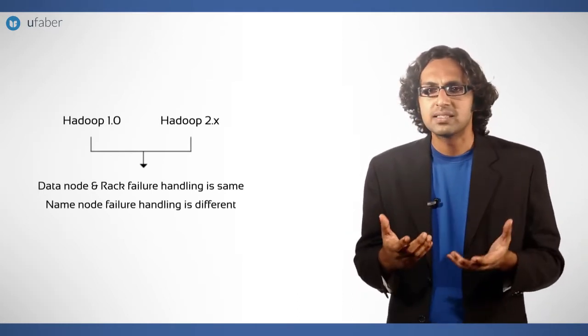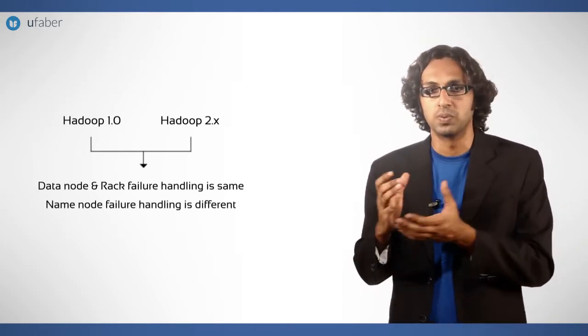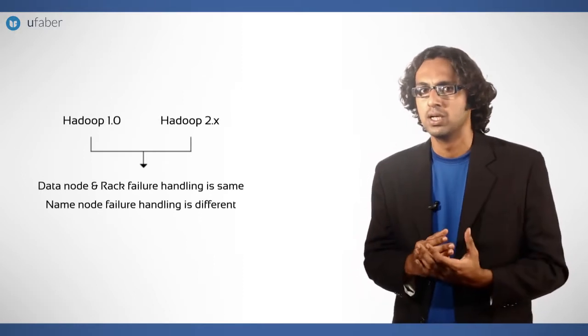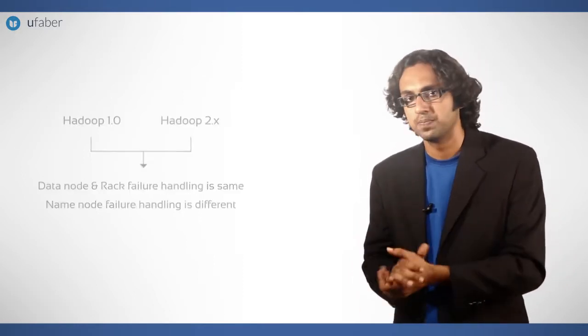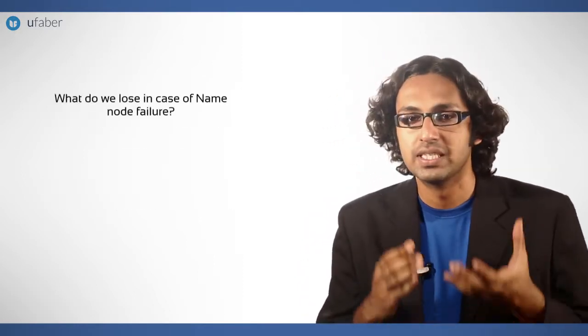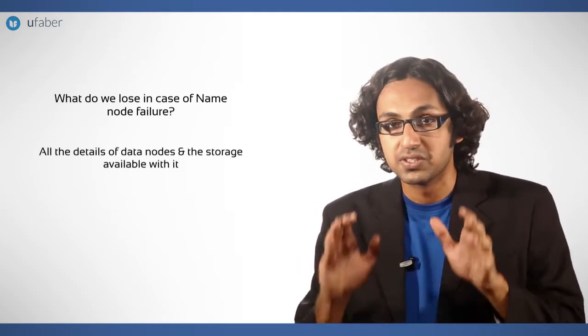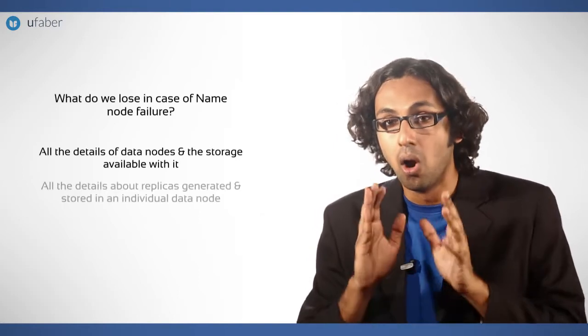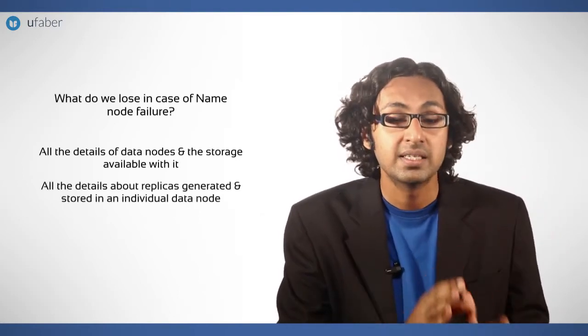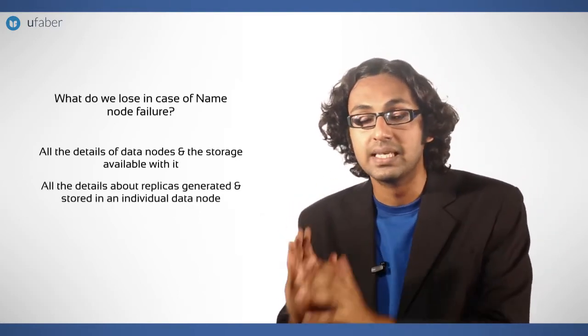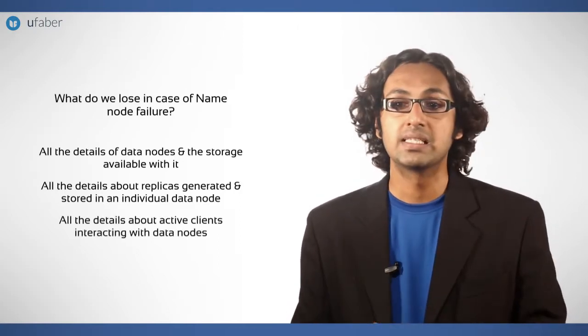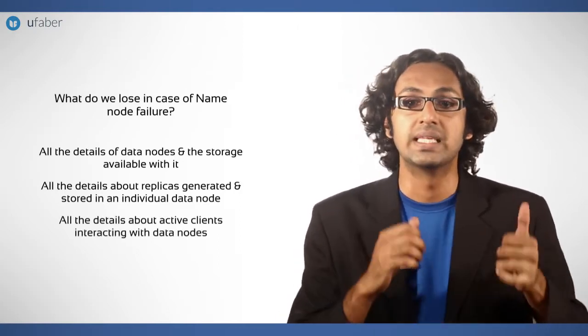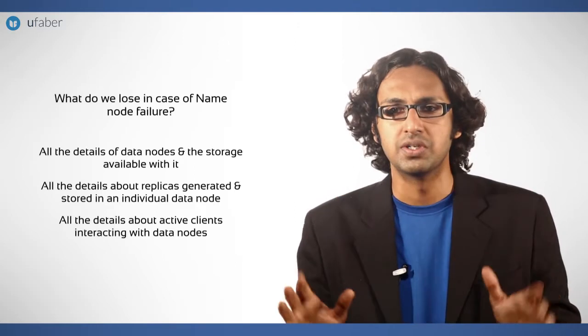As name node has complete information about Hadoop cluster, it becomes crucial to handle name node fault. In fact, what do we lose in case of a name node failure? All the details of data nodes and the storage available with it, all the details about replicas generated and stored in an individual data node, and all the details about active clients interacting with data nodes. We lose all three of these.